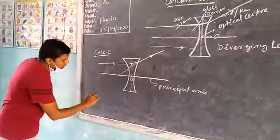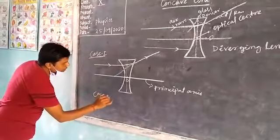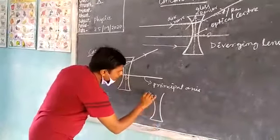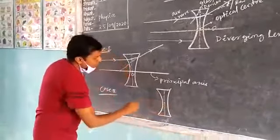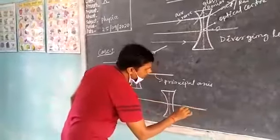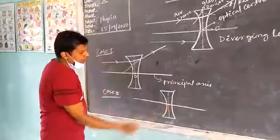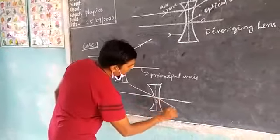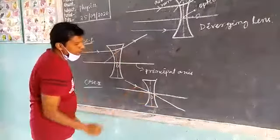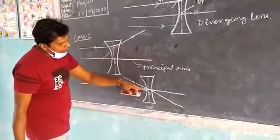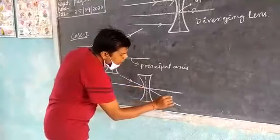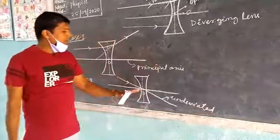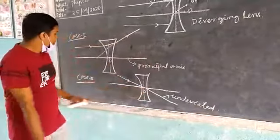Similarly, case two: this is the concave lens and this is the principal axis. When the ray of light passes through the optical center, it is undeviated — that means the ray of light continues straight without bending.